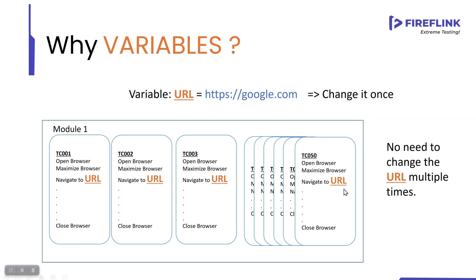Change it once and the changed URL will be reflecting in all the other scripts. This is why we use the variable concept. Whenever there is data, you should never hard code it — always store the data in a variable and use that variable inside the automation scripts, so that your data maintenance becomes easier.